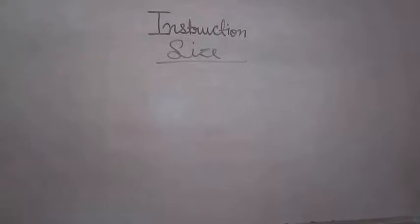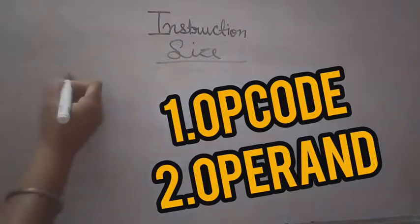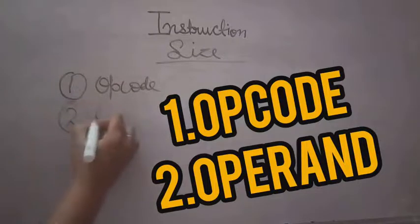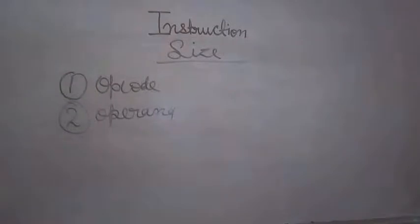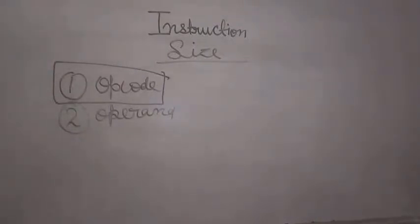We already know that each instruction has two parts. First one is opcode and second one is operand. Basically, opcodes are operation codes — opcode is an operation code which tells the type of operation to be performed, and it defines the operation to be performed.